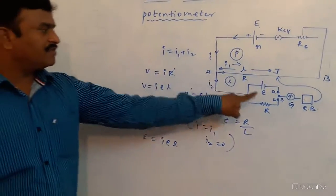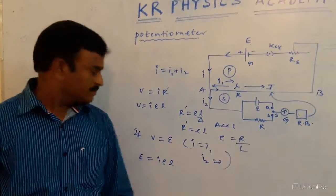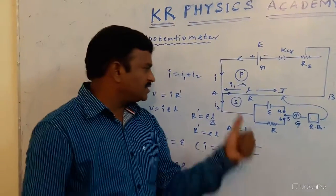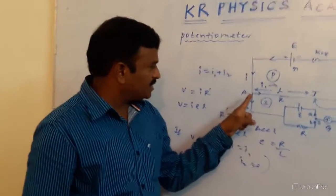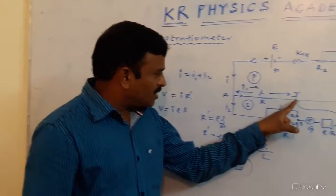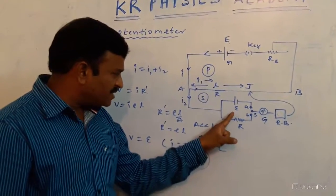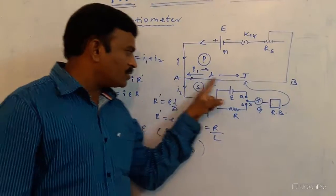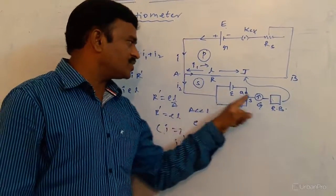Where E is the EMF of the secondary cell, ρ is the specific resistance, L is the balancing length. The main principle of this potentiometer is: how much potential drop is there, same EMF exists here, then current will flow through the primary only. The current doesn't flow through the secondary one.